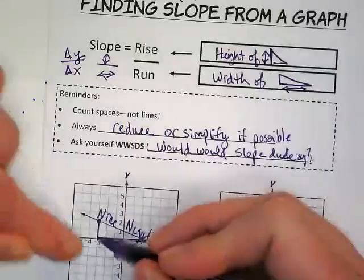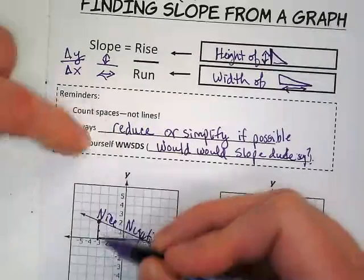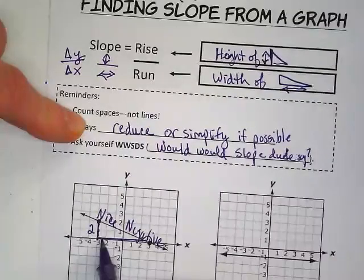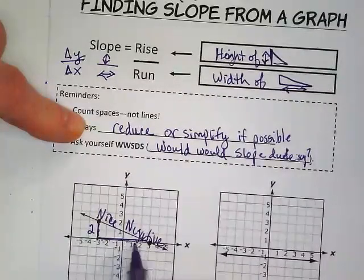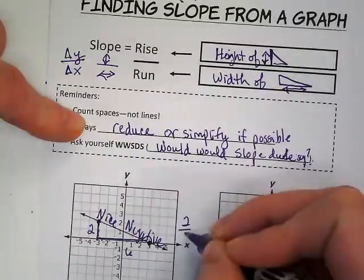What's my rise? I'm counting from zero here to one, two. That's where I'm counting my spaces, not my lines. So it's a rise of two. And my run is going to be one, two, three, four, five, six spaces. So I have two over six.